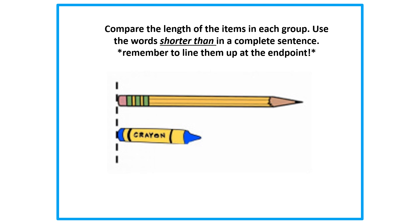I think I'm ready to make my decision. I think I have found which item is shorter than the other. Have you? I think that this crayon is shorter than the pencil. What do you think? Agree or disagree? If you agree, I'd like to know why you agree that the crayon is shorter than the pencil. And if you disagree, I'd like to know why you don't think that the crayon is shorter than the pencil.